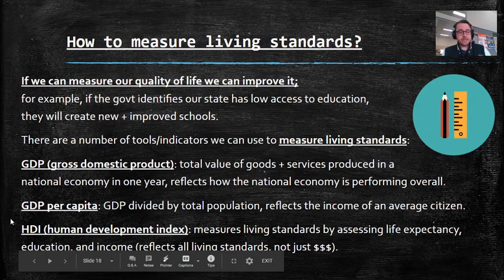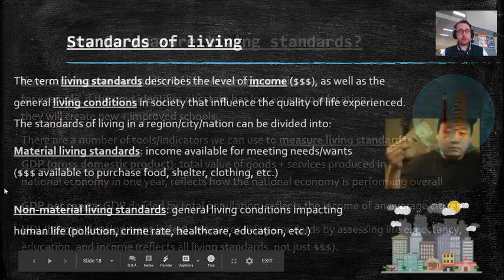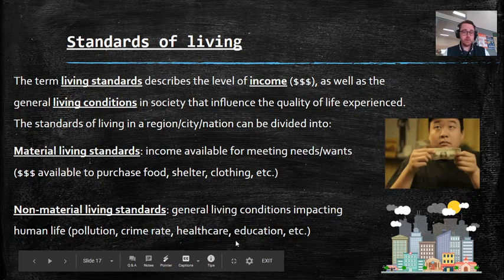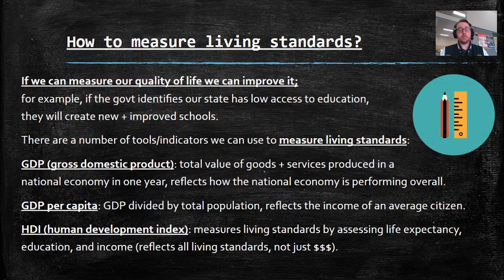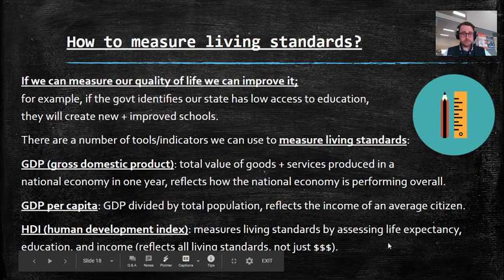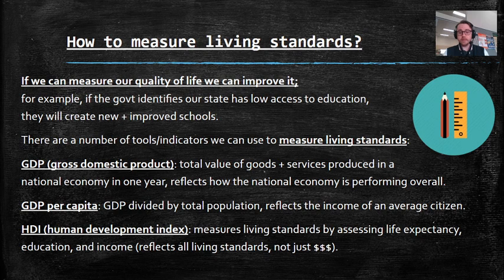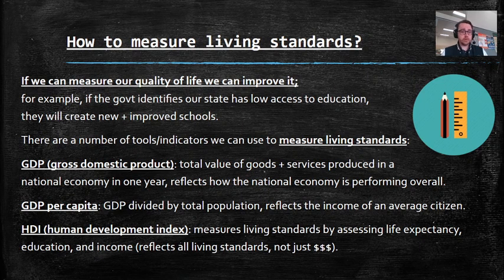The last one is HDI — Human Development Index. You'll notice that GDP and GDP per capita very much focus on money, on material living standards and income. But that's not the only thing that impacts your life. You can have a lot of money, but if there are no hospitals or schools in your nation, you'll have a very low quality of life. The Human Development Index measures living standards by assessing not just income, but also life expectancy — which reflects your health and access to food, water, and medicine — your access to education, and your income. It reflects all living standards, not just dollars. That's why some people prefer to use HDI when measuring living standards of a country.